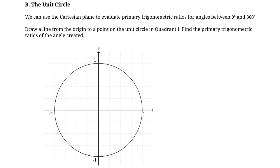In the last video we looked at what the principal angle is, angles in standard position, and what the related acute angle is and how you find that related acute angle for whatever angle that you have. That will all be extremely important when we start evaluating primary trig ratios for angles between 0 degrees and 360 degrees. But first we need to learn about the unit circle.